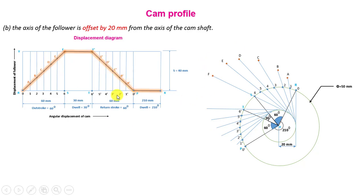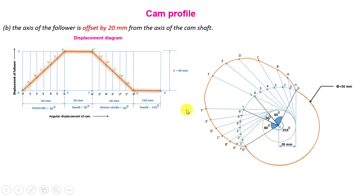Using the same procedure as before, for the return stroke take distance 6'F' in a compass with 6' as center, draw an arc to get point F'. Similarly locate points E', D', C', B', and A'. Finally, join all these points with a smooth curve to get the required cam profile for the offset follower case.